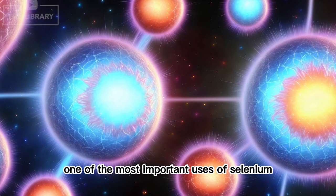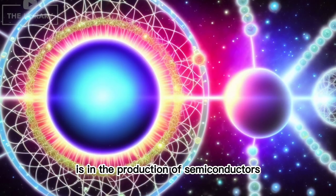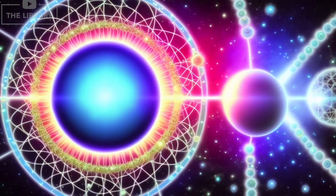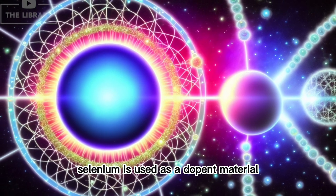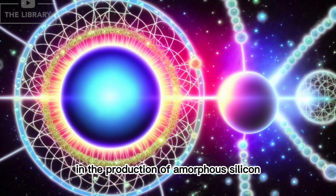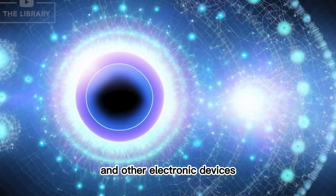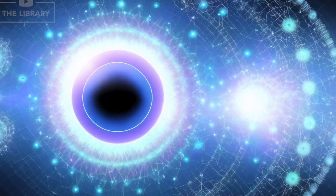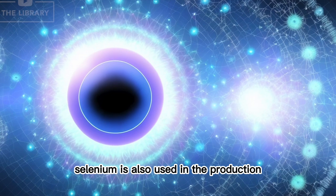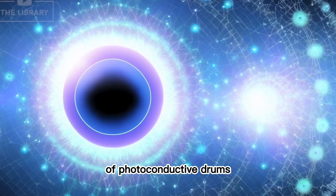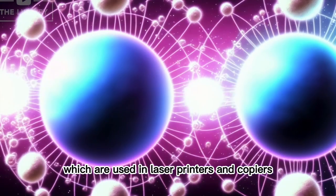One of the most important uses of selenium is in the production of semiconductors. Selenium is used as a dopant material in the production of amorphous silicon, which is commonly used in thin-film solar cells and other electronic devices. Selenium is also used in the production of photoconductive drums, which are used in laser printers and copiers.